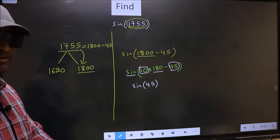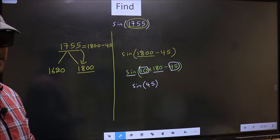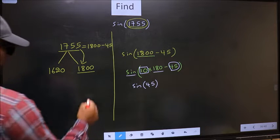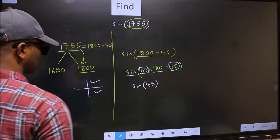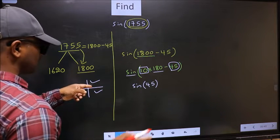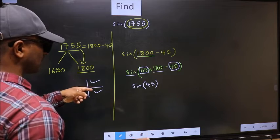And all the even multiples of 180 lie either in the first or in the fourth quadrant.